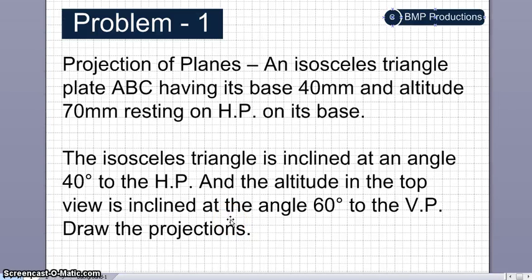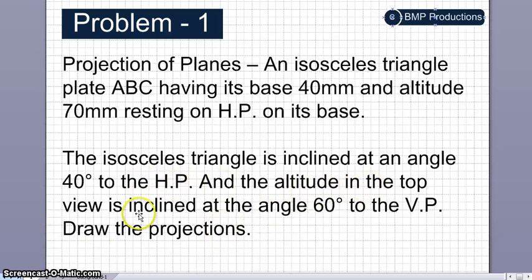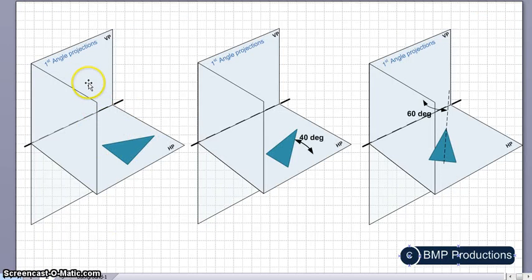This video is about projection of planes. The problem involves an isosceles triangle plate ABC having its base 40 mm and altitude 70 mm, resting on the horizontal plane on its base. The triangle is inclined at 40 degrees to the horizontal plane, and the altitude in the top view is inclined at 60 degrees to the vertical plane.